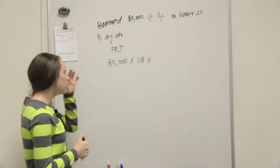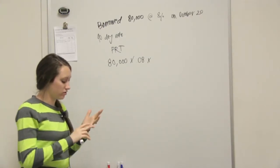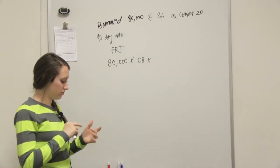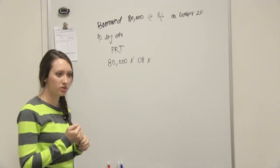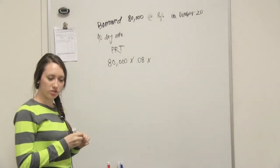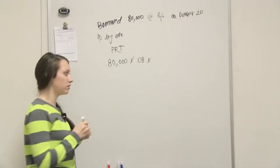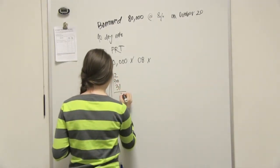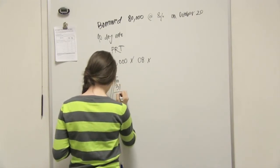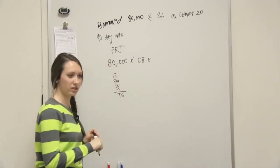So we'll have 20, 21, 22, 23, 24, 25, 26, 27, 28, 29, 30, 31—12 days from October, 30 days from November, and 31 from December, so we'll have 73 days.